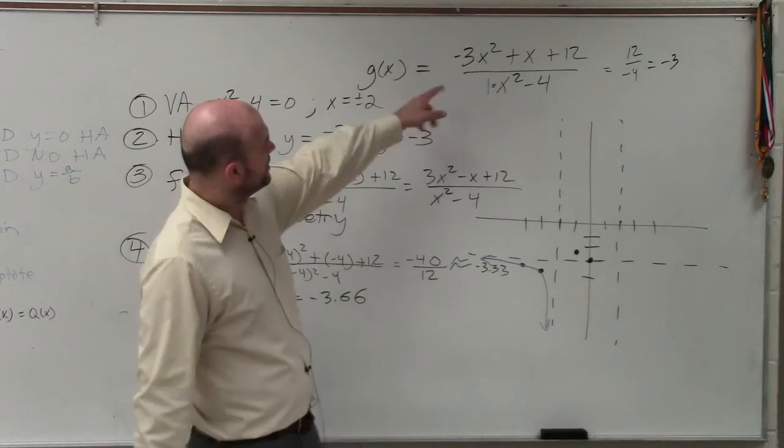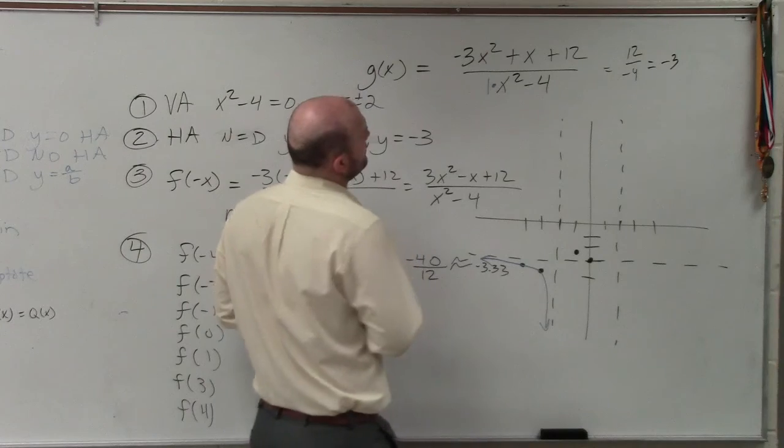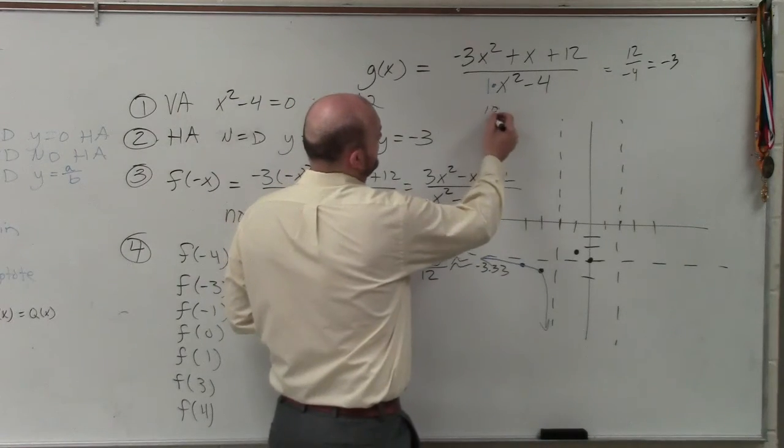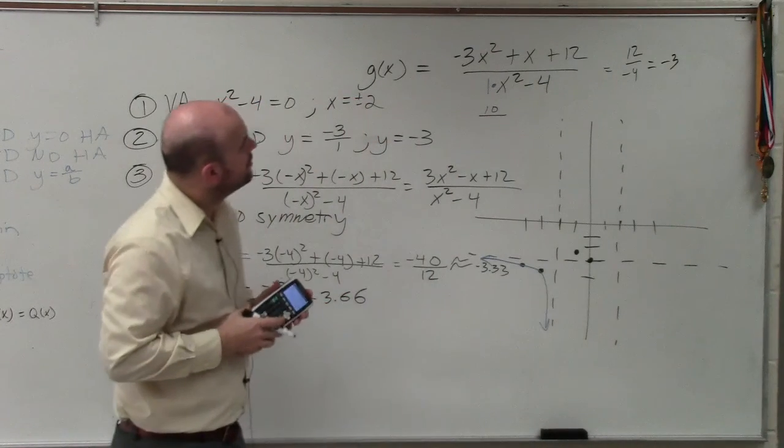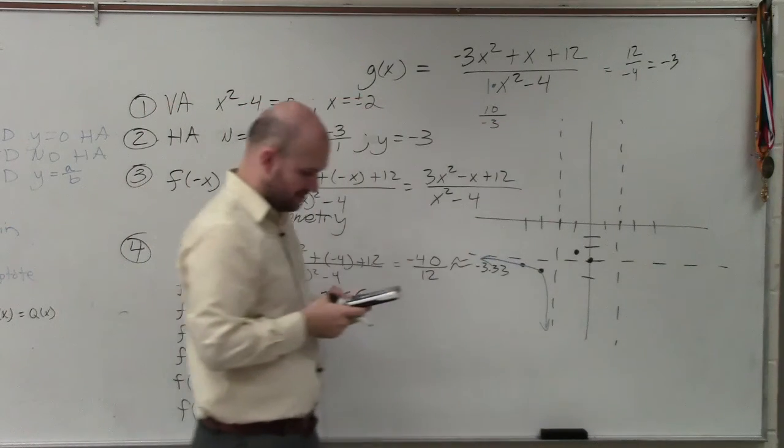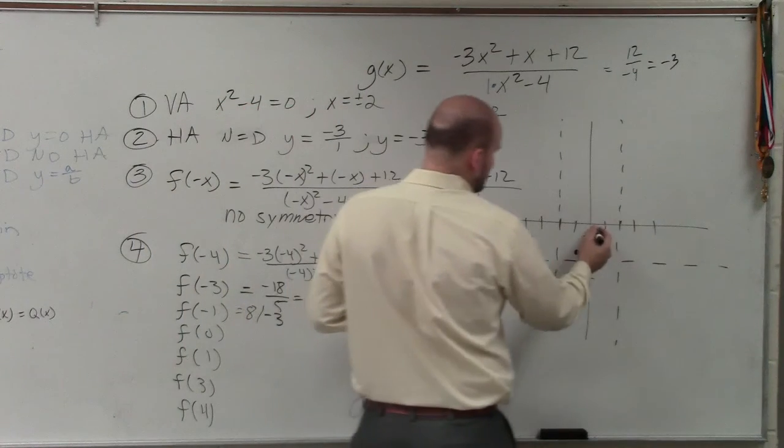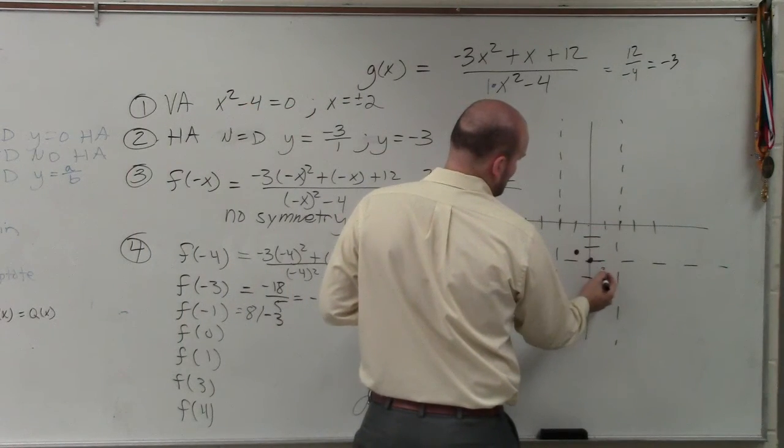Let's check at number 1. If we plug in 1, you have negative 3, negative 2. That's going to be 10 over 1 squared is 1, over negative 3. So 10 divided by negative 3 is negative 3.33. So at 1, I'm at negative 3.33.